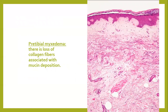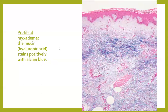Here you can see how pretibial myxedema looks. The histopathological appearance of different mucinoses is almost similar — there is loss of collagen fibers and deposition of a bluish material between the collagen bundles. With the mucin stain, which is the Alcian blue stain, this mucin deposition is highlighted from the papillary dermis deep into the reticular dermis.